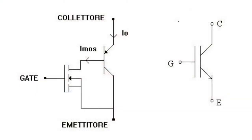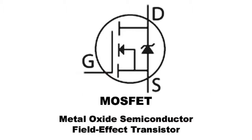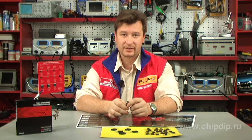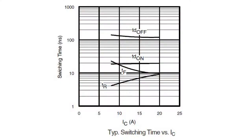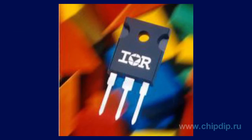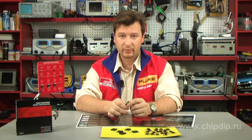IGBT transistors were initially designed to become a cheap and effective replacement for power field effect transistors with an average voltage range of 400 to 600 volt. However, the developers of IGBT had to solve two main problems to reach their goals: slow switching time and high prime cost of the devices. The WARP series of IGBT transistors by International Rectifier came as a solution to both of these problems.